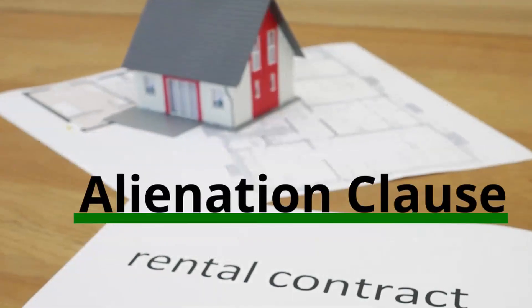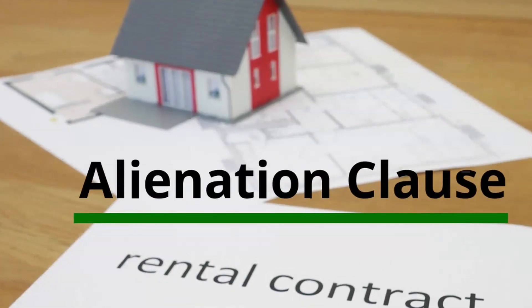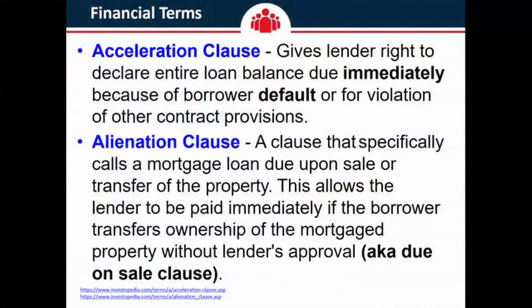Alienation, on the other hand, is what's called a transfer of ownership. Another name for alienation clause is due on sale provision — a clause that specifically calls a mortgage loan due upon the sale and transfer of the property. Maybe they quit claimed it, maybe they deeded it, maybe they transferred it to their sister's name. This allows the lender to be paid immediately if the borrower transfers ownership of the property without the lender's approval. Also known as a due on sale clause.